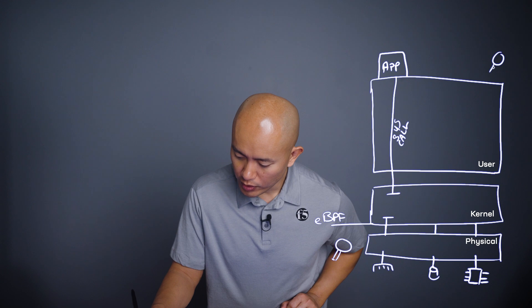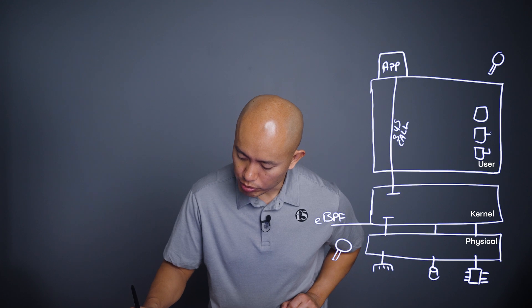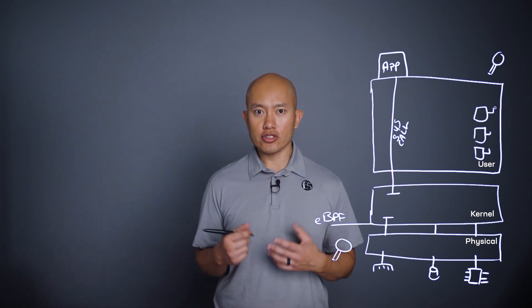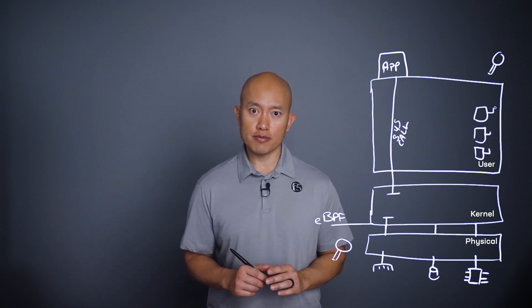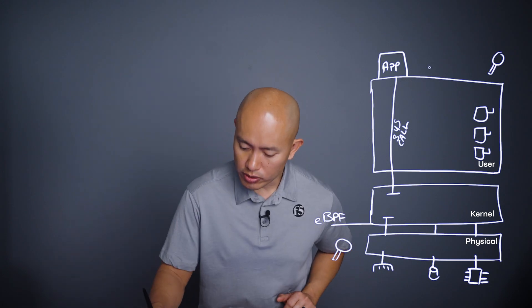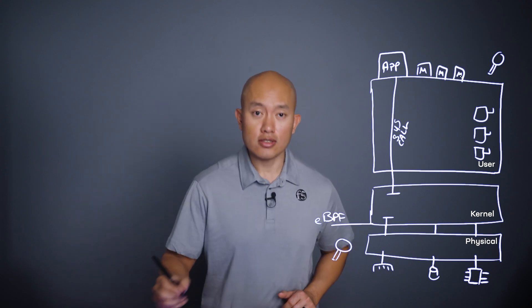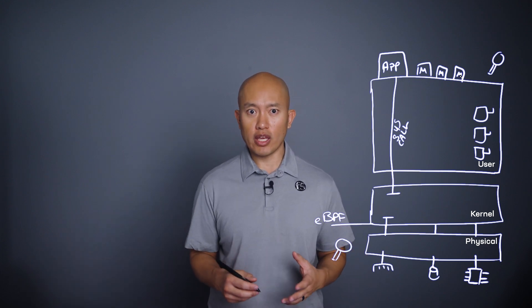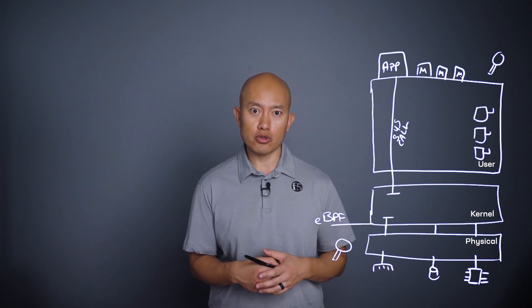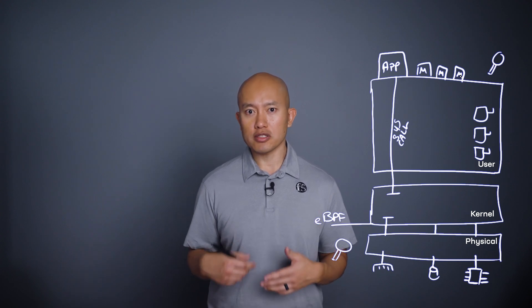Observability — I'm going to draw a couple of magnifying glasses here, and also a representation of a process tree. eBPF can see traffic from any device on the server and the behavior of any process in the process tree. As applications get broken down into microservices — I'm going to represent those with these boxes here — it's increasingly difficult to bolt on observability in the user land. Using eBPF allows for user space processes such as system monitors, process visualizers, and tracing tools to have a kernel space point of view.